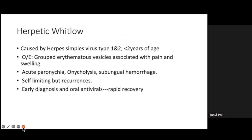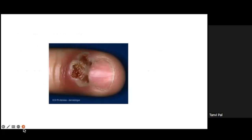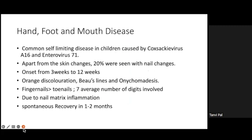Herpetic whitlow is inflammation of the nail due to herpes simplex type 2, again seen in children less than two years of age. It presents as grouped edematous vesicles associated with pain and swelling. It can lead to acute paronychia, onycholysis, and subungual hemorrhage. It is self-limiting but recurrences occur, so early diagnosis and oral antivirals lead to rapid recovery. In the picture, you can see grouped vesicles that have coalesced to form an ulceration of the proximal nail fold — this needs oral acyclovir.